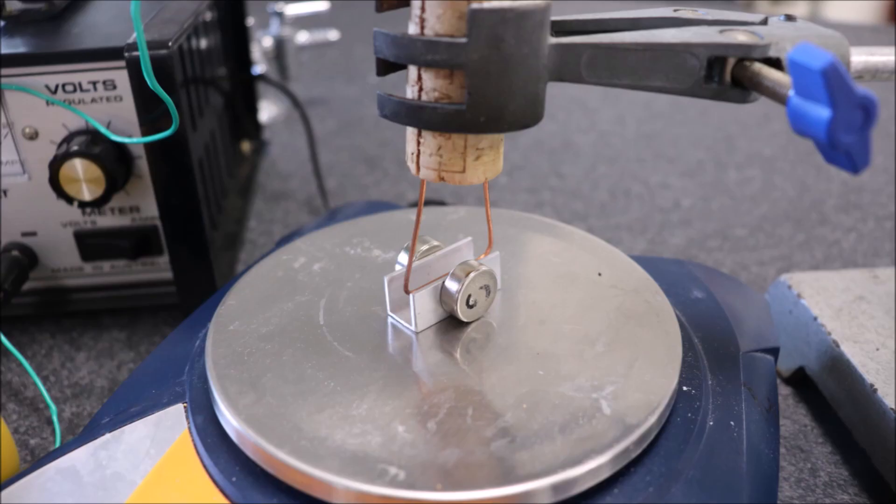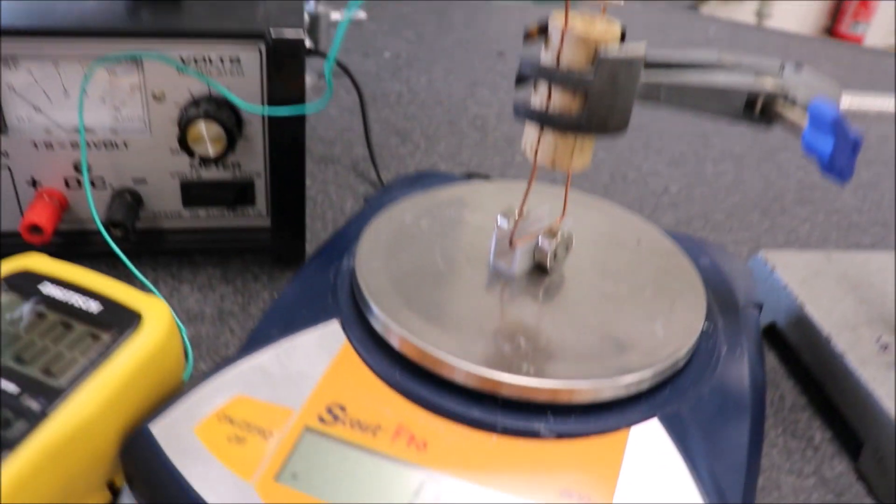In this close-up, you can see a little piece of aluminum channel which has a rare earth magnet on either side of it and a piece of copper wire down the middle.